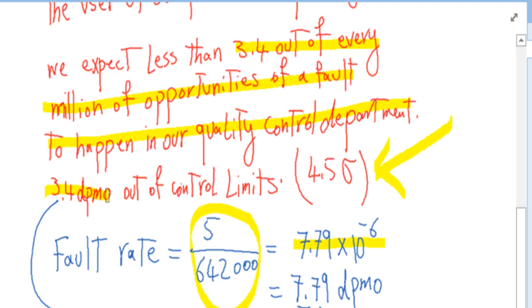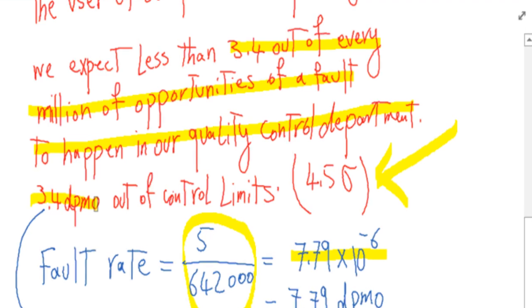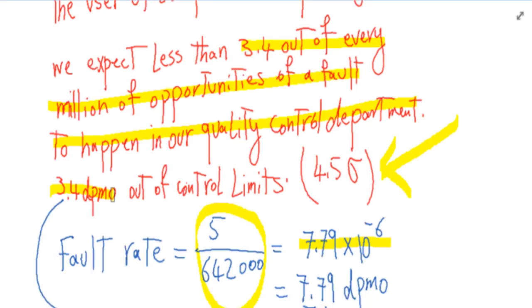Now comparing that, we realize that 7.79 defects per million is more than 3.4 defects per million. Therefore, this process is worse than Six Sigma.